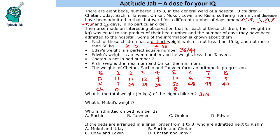The weights of Chetan, Sachin and Tanvir form an arithmetic progression. Chetan, Sachin and Tanvir. Okay, now if we see arithmetic progression 12, 24 can go with 36 and 48.